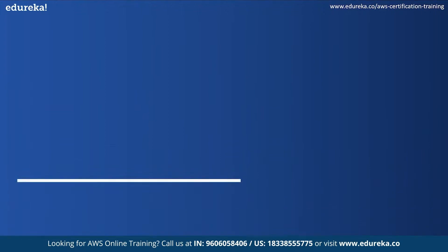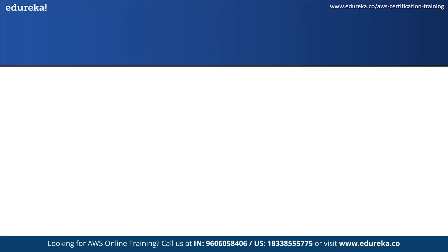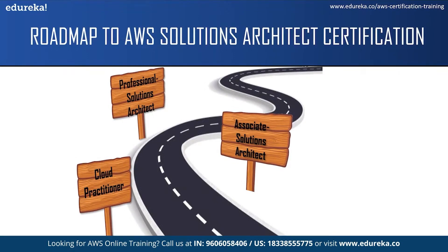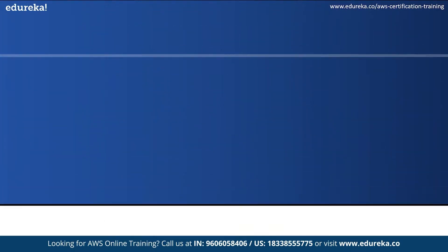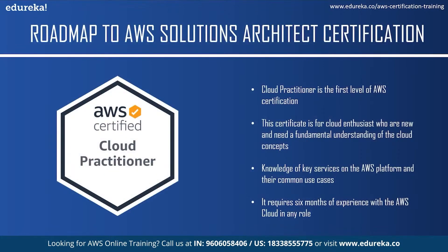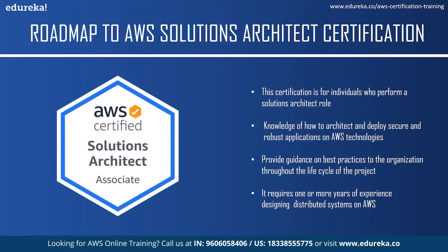Now let us see the roadmap to AWS Solutions Architect Certification. First, we have the Cloud Practitioner Certification, next the Solutions Architect Associate level certification, and then the Solutions Architect Professional level certification. The Cloud Practitioner Certification will help you have an overview of AWS concepts and services and give you a fundamental understanding of cloud concepts. This is the easiest and beginner-level certification, but it requires six months of experience with the AWS cloud in any role — technical, managerial, sales, purchasing, or financial.